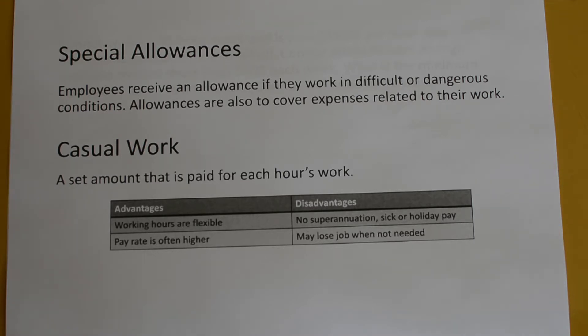Casual work is when you work for a set amount of hours and you get a set amount for each hour of work you do. Advantages of casual work are working hours are flexible and pay rate is often higher. This means they can ask you to work for certain hours, which is why that's flexible, and your pay rate is often higher because you do not have a stable job.